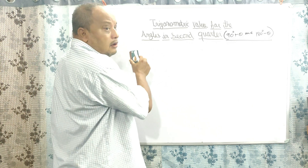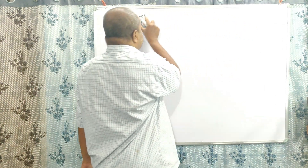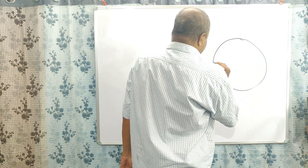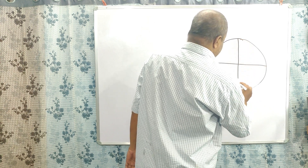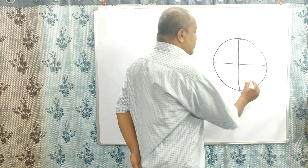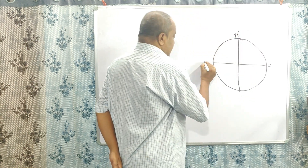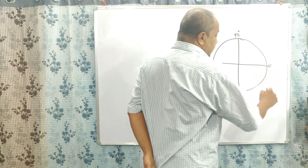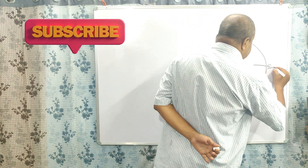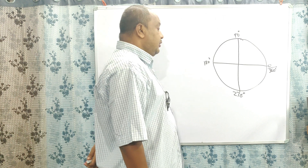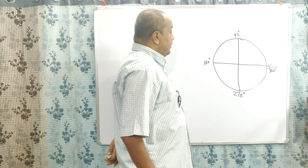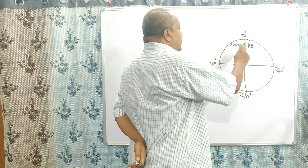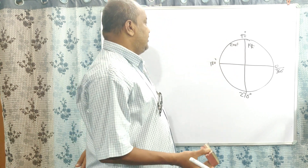Now let us draw the 360 degree circle. This is the 360 degree circle. Previously I have told that this is 0 degrees, this is 90 degrees, this is 180 degrees, and this is 270 degrees. Again, this is 0 degrees or 360 degrees. Now we are going to find out the trigonometric values in the second quadrant — that means this is the first quadrant, this is the second quadrant. So the angle is between 90 degrees and 180 degrees.